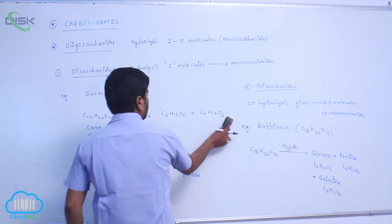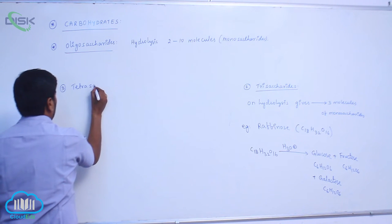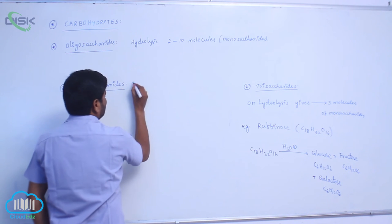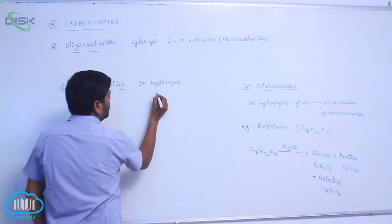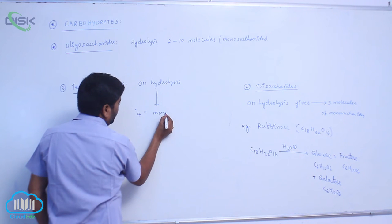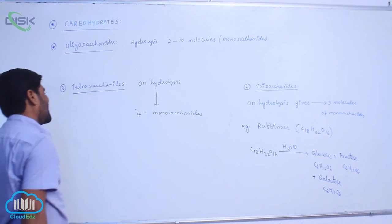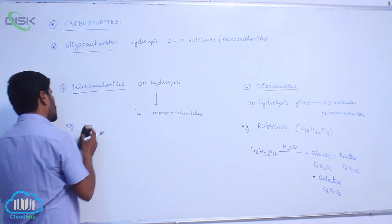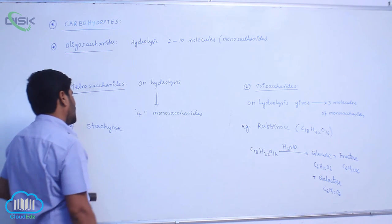So this is known as raffinose. The next type is tetrasaccharide. On hydrolysis, a tetrasaccharide gives four monomer units or four monosaccharides. An example for tetrasaccharide is stachyose.